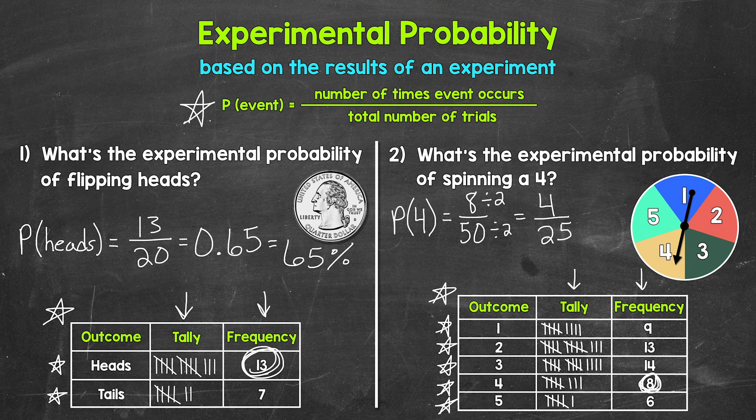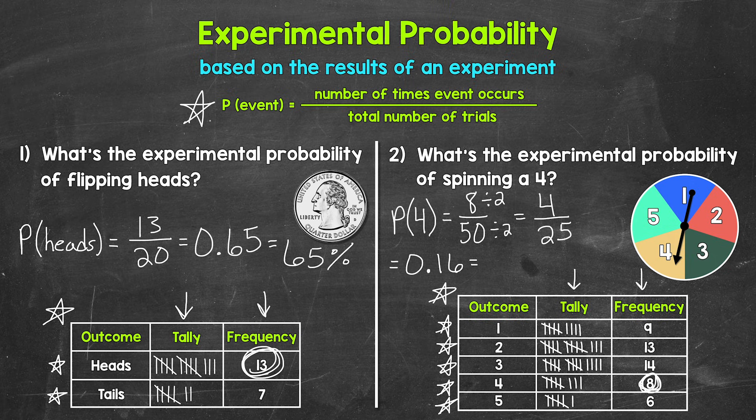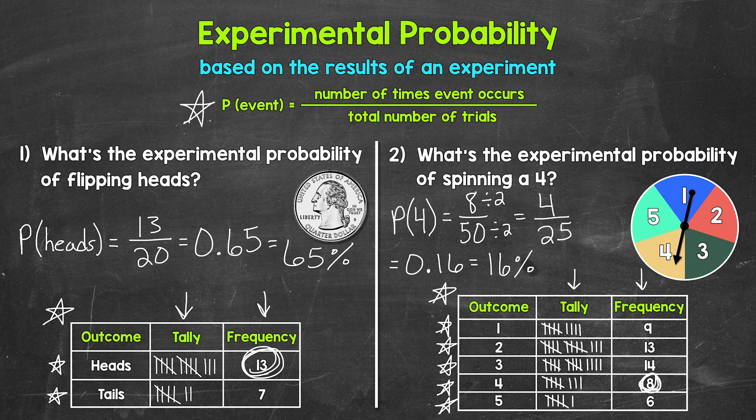Now we need our decimal and percent. For our decimal, we need to do eight divided by 50 or four divided by 25. Either way, we get 0.16, 16 hundredths. And now we need our percent. So we need to multiply that decimal by 100. That gives us 16 percent. And that's the experimental probability of spinning a four.